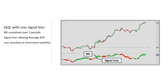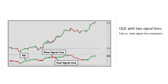Originally, the QQE signals would be a long when the RSI crosses above the signal line, and a short when the RSI crosses below the signal line. Later versions of the QQE indicator feature two signal lines, as does our version in the indicator library. The signals are basically the same as before, but now we're using the slow signal line versus the fast signal line.